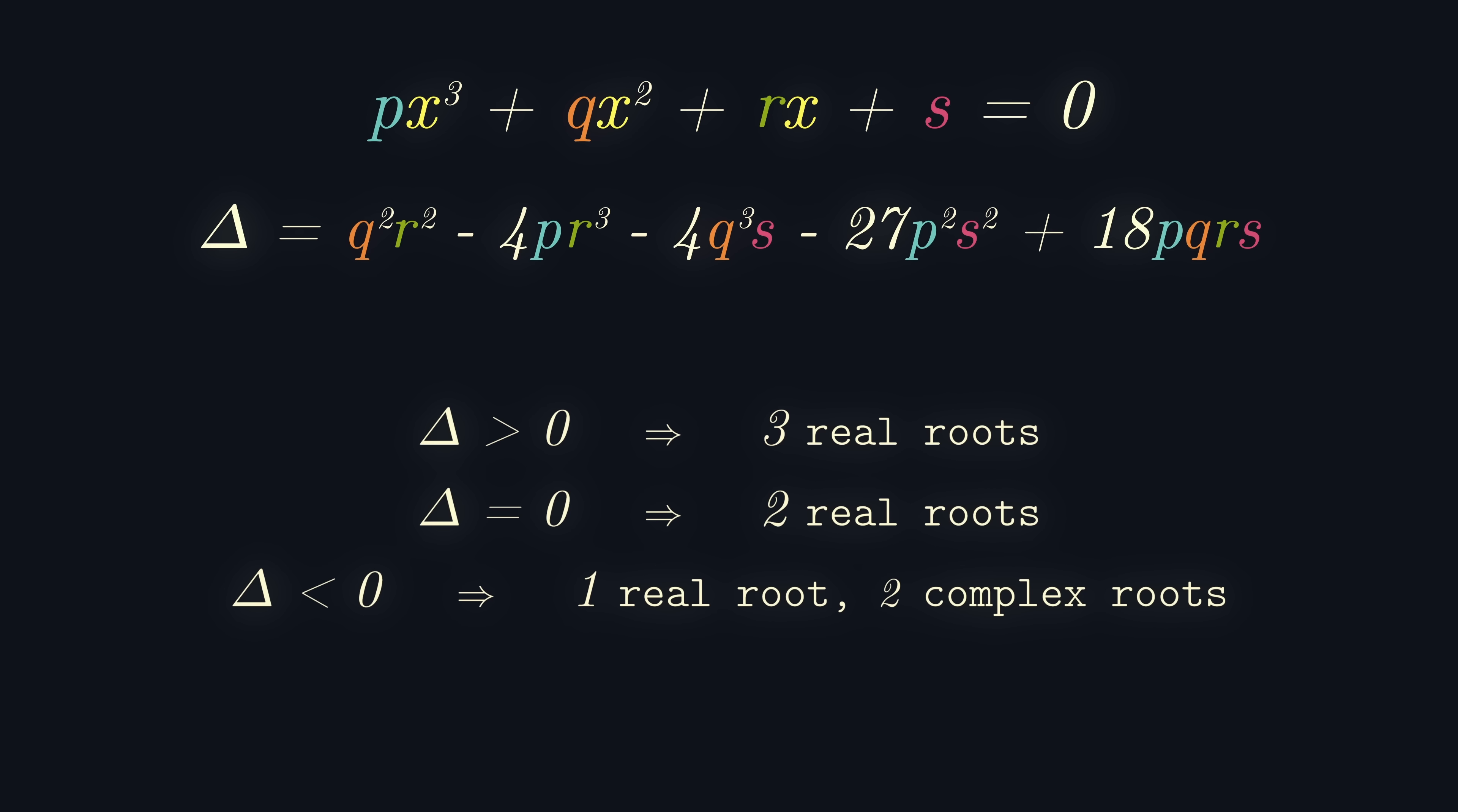Well, there's an analogous cubic discriminant which we can use for this problem. The discriminant of the cubic px cubed plus qx squared plus rx plus s equals 0 is this mess which I've shown on the screen. If this is greater than 0, we have three real roots. If this is equal to 0, we have two real roots. And if this is less than 0, we have one real root and two complex roots.